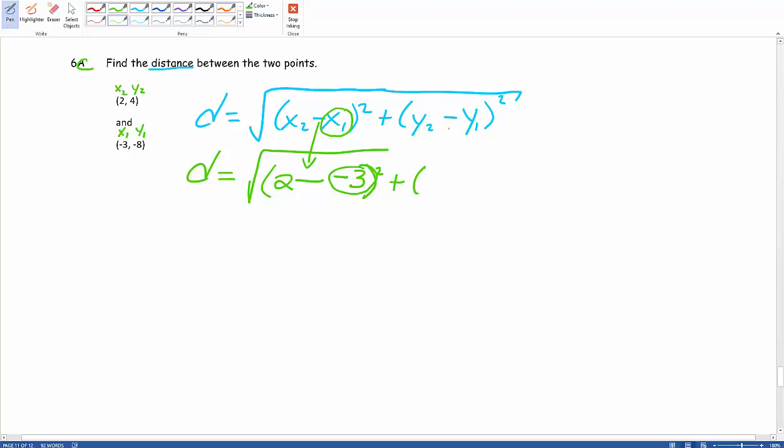Plus our y2, here he is, 4, minus, again from the formula, our y1. Well, in this case, y1 is also a negative. So in this case, he's negative 8, and that is being squared.